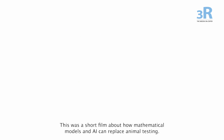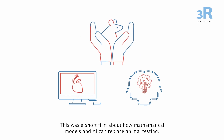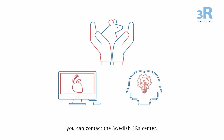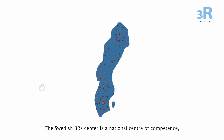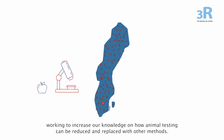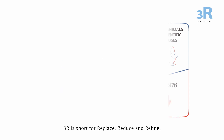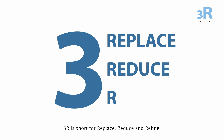This was a short film about how mathematical models and AI can replace animal testing. If you want to know more or get in contact with someone who works with these types of models, you can contact the Swedish 3Rs Centre. We are the ones who made this film. The Swedish 3Rs Centre is a national centre of competence working to increase our knowledge of how animal testing can be reduced and replaced with other methods. 3R is short for Replace, Reduce and Refine.